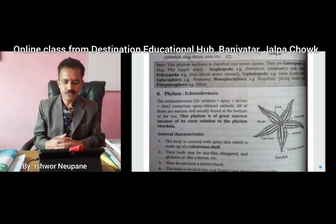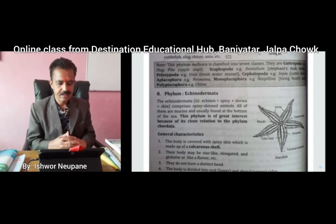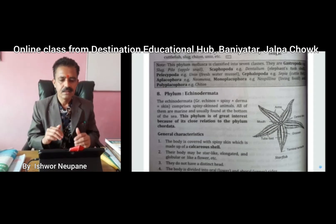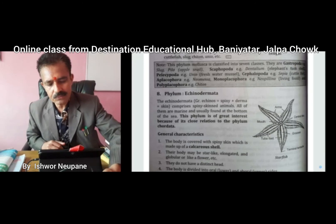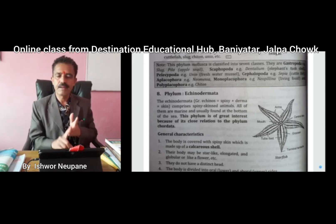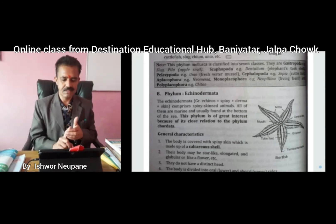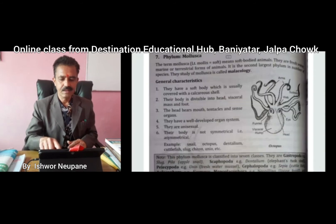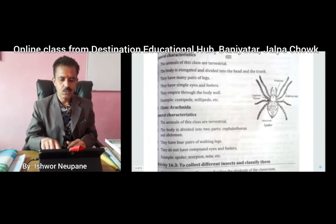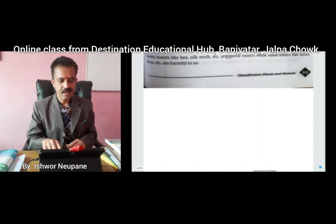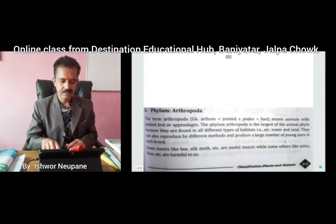Finally, we will discuss the last phylum of invertebrates - Echinodermata. Let's remember the different phyla of animal invertebrates: Porifera, Coelentrata, Platyhelminthes, Nematohelminthes, Annelida, Arthropoda, Mollusca, and Echinodermata. Note that there is one phylum which has classes - that is Arthropoda.